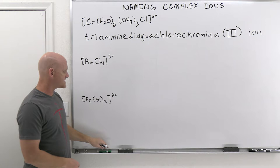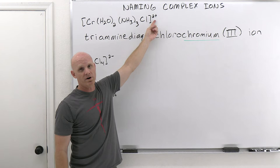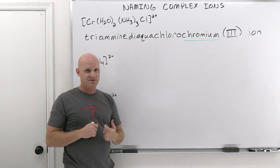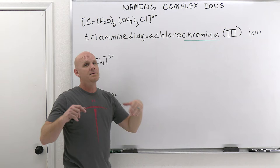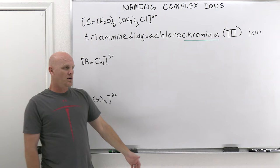For cations and neutral species, we name the metal as-is. But when you name the metal for a complex anion, you always end it with an -ate ending. So if this overall complex had a negative charge, we would say chromate instead of chromium. The key is: if the entire complex has an overall negative charge, that's when you use the -ate ending.